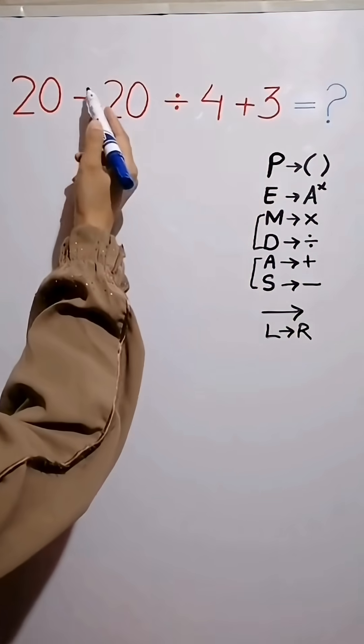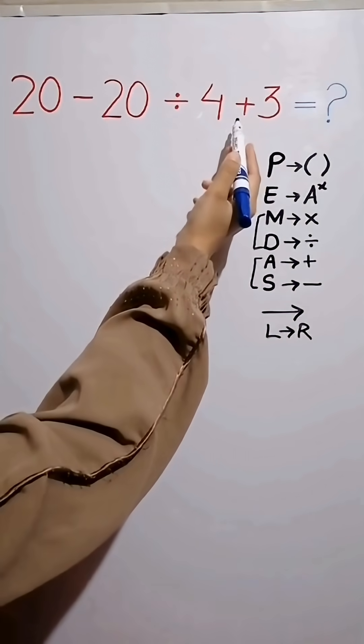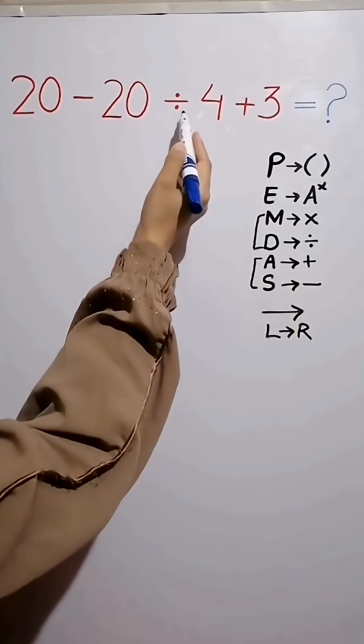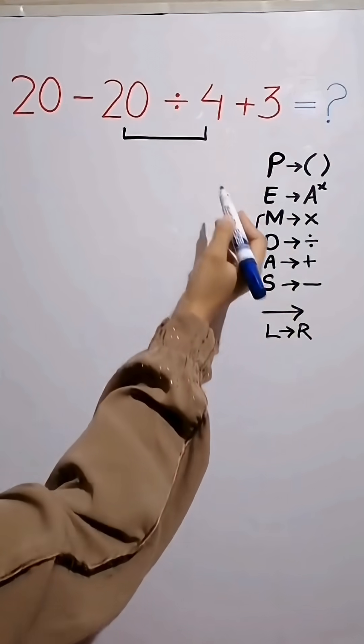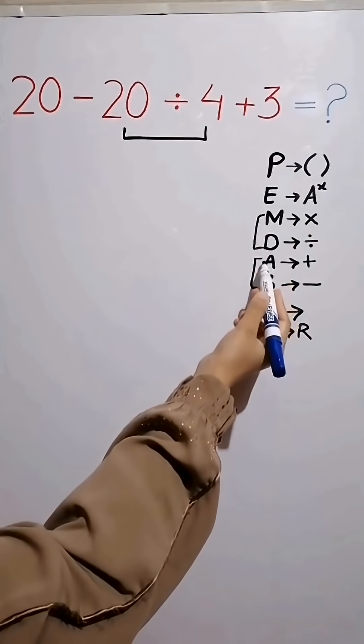In this expression, we have subtraction, division, and finally addition. According to PEMDAS, first we do division because division has higher priority than addition and subtraction.